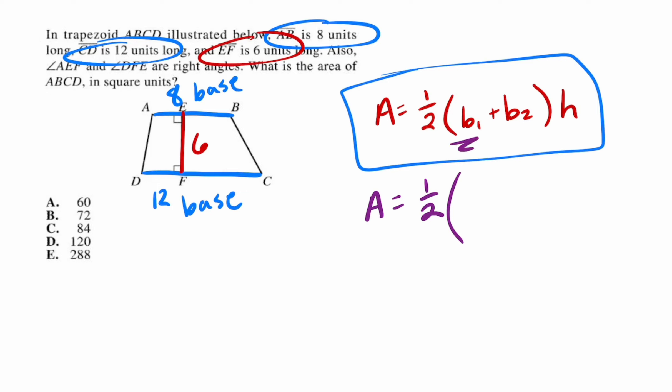B1 - again, it doesn't matter which one's which. I'll just call this base one and this guy base two. So base one is 12 plus base two, which is 8, times the height, which is 6.